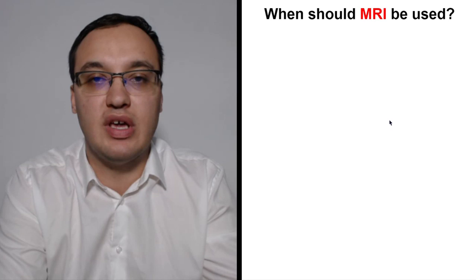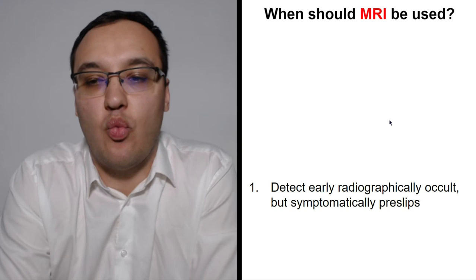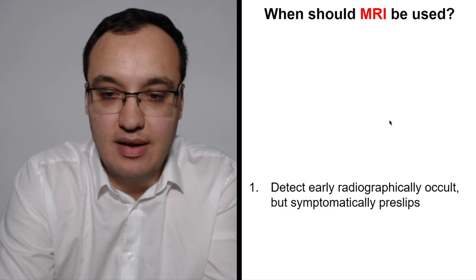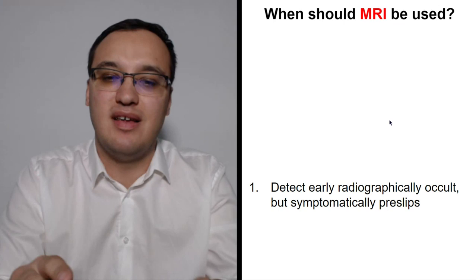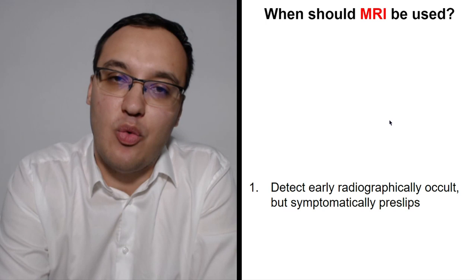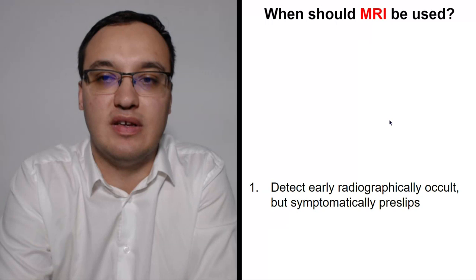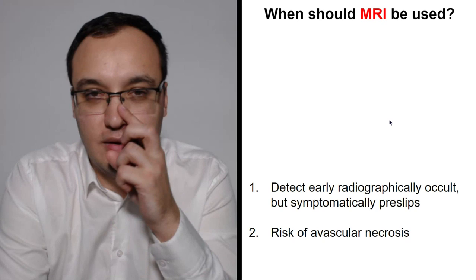MRI should be used when the patient has symptoms but X-ray shows nothing — this is called occult disease. MRI is more expensive and takes more time, but it is important when we suspect early disease that is not yet visible on X-ray.